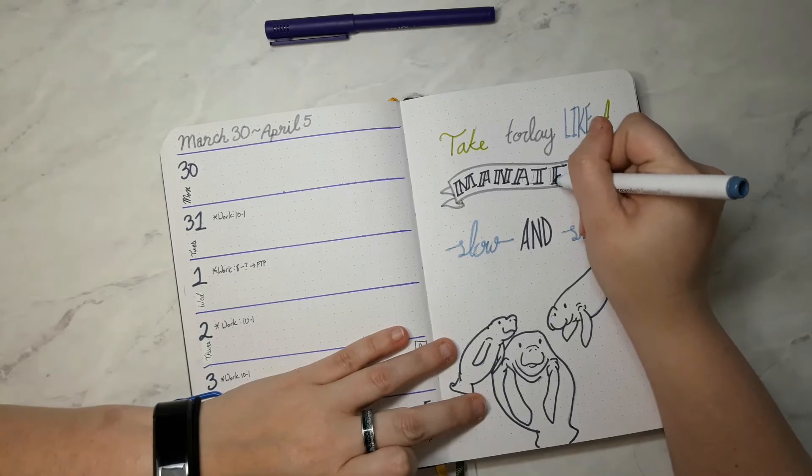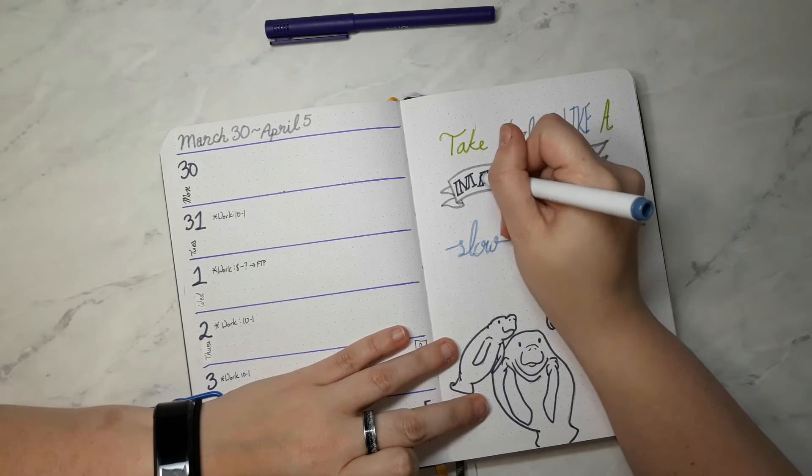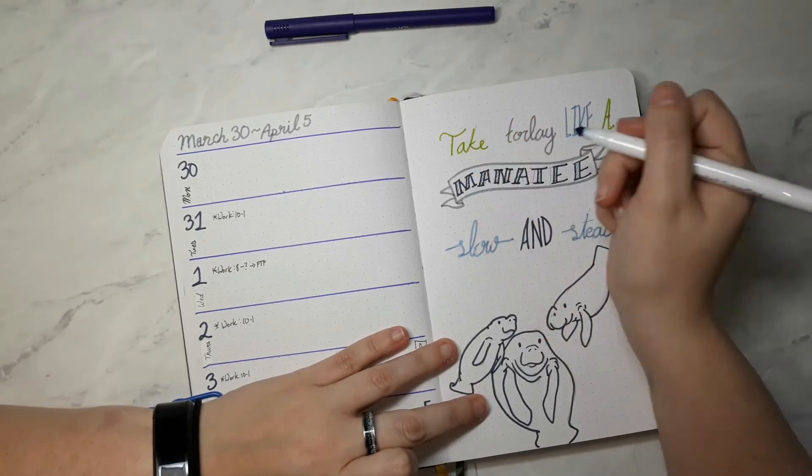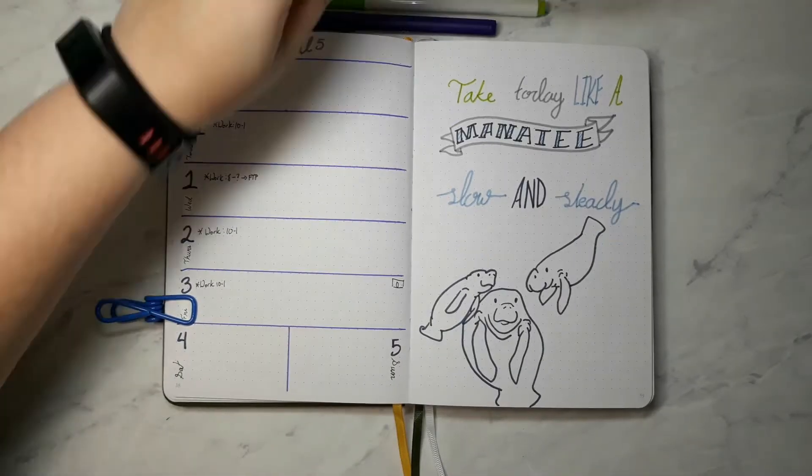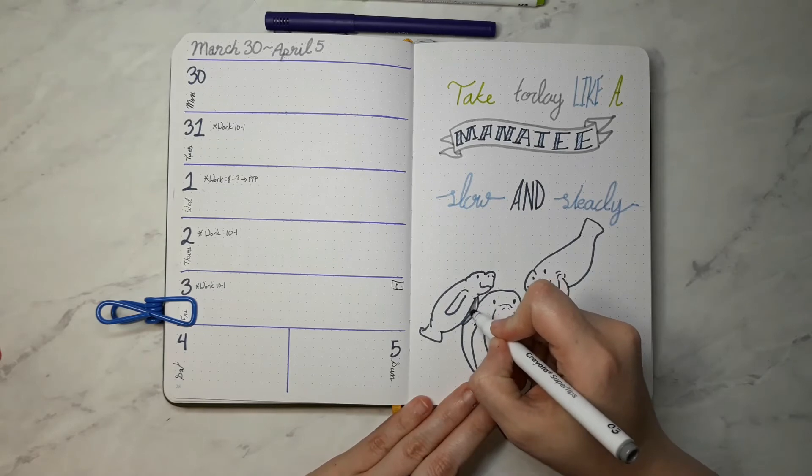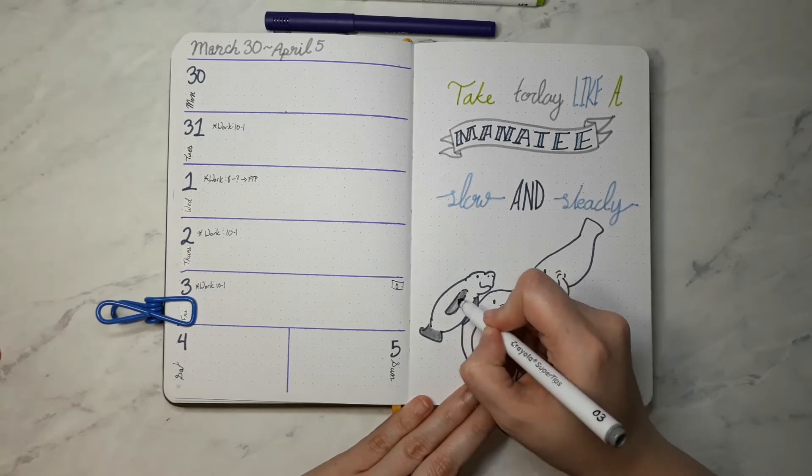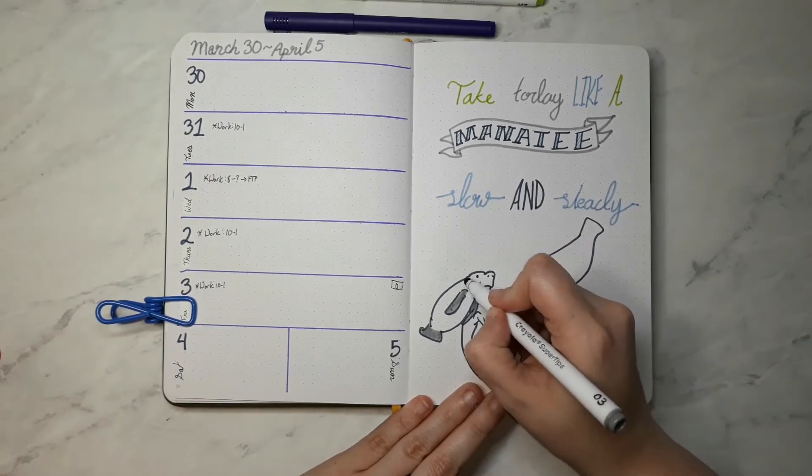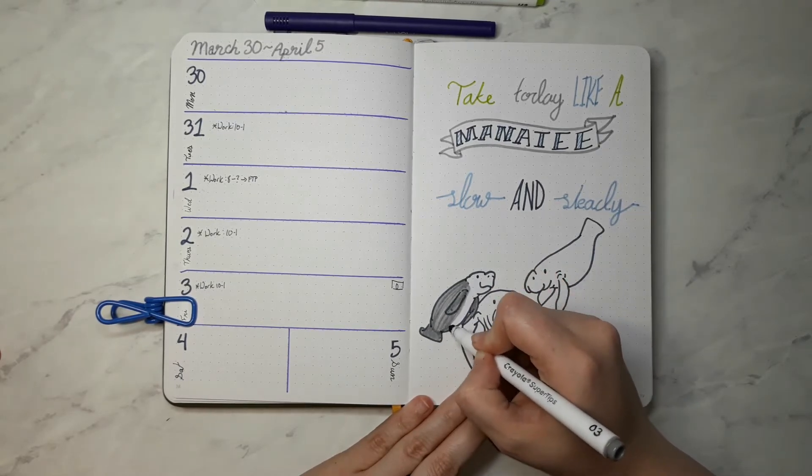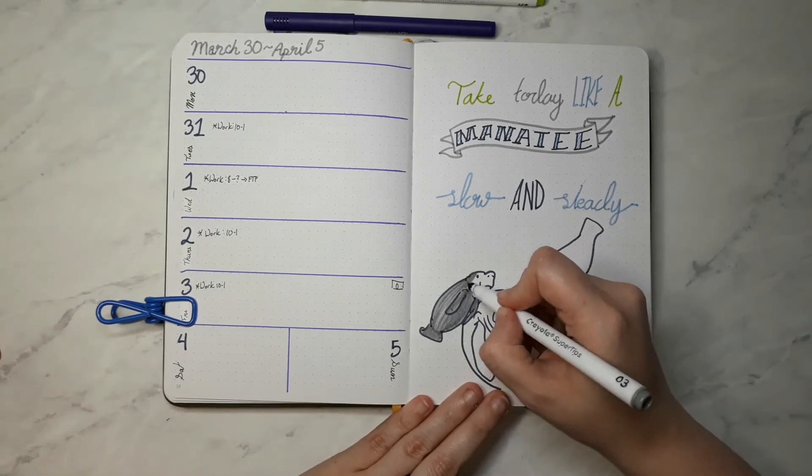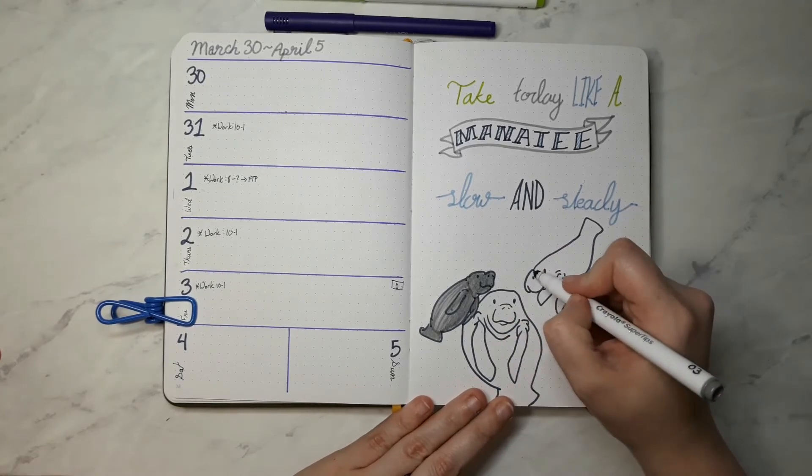In case you were curious, there are numbers on the bottom of my super tips. I decided to color code my super tips when I originally bought them in a pack of 50. I was getting really frustrated trying to figure out what colors I wanted to use because they weren't numbered. I went ahead and numbered all of my markers with a Sharpie and made a little color code sheet. I have a picture of that on my Instagram.